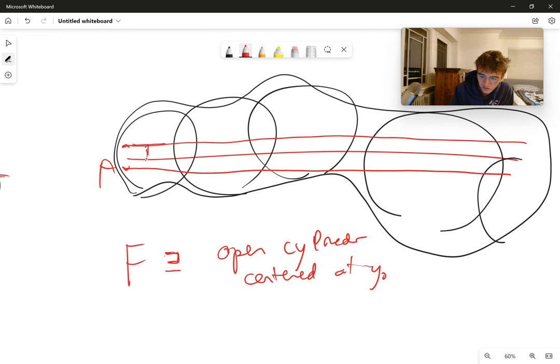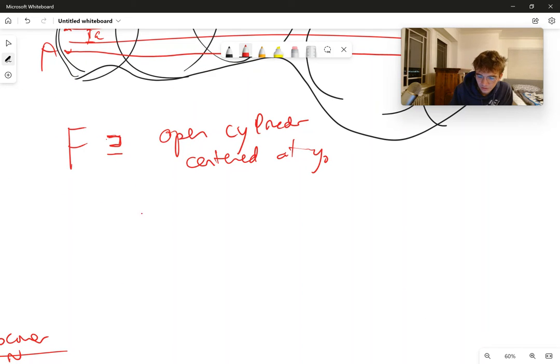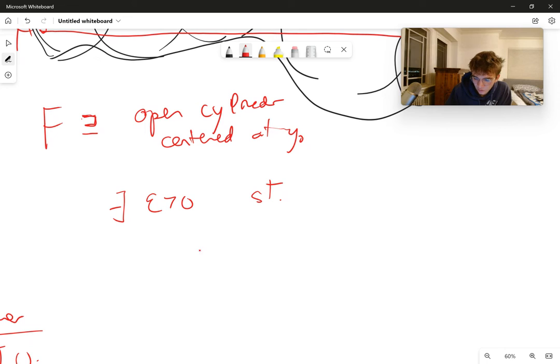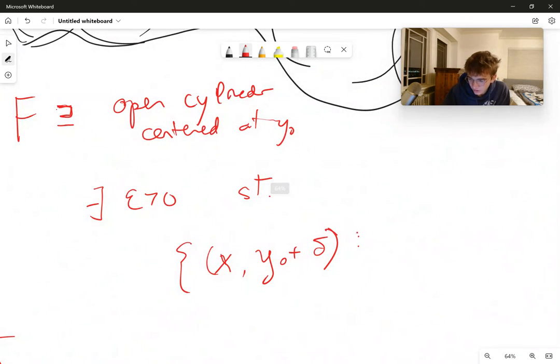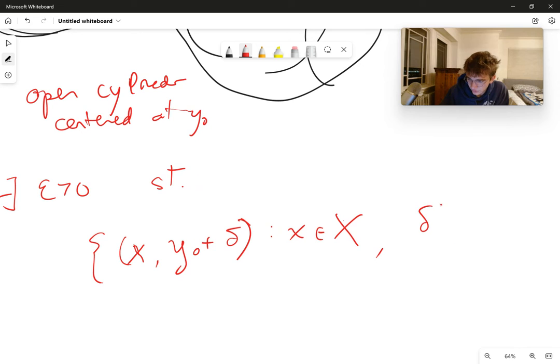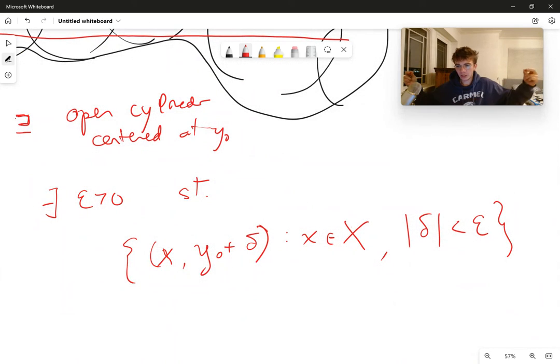So if I wanted to be more explicitly explicit here, I would say there exists an epsilon greater than zero such that the set of all x comma y naught plus delta such that x is within X, and delta absolute value is less than epsilon. This little open cylinder centered around our line A has to be covered by F. And this is just due to the finite nature of the open cover of F.